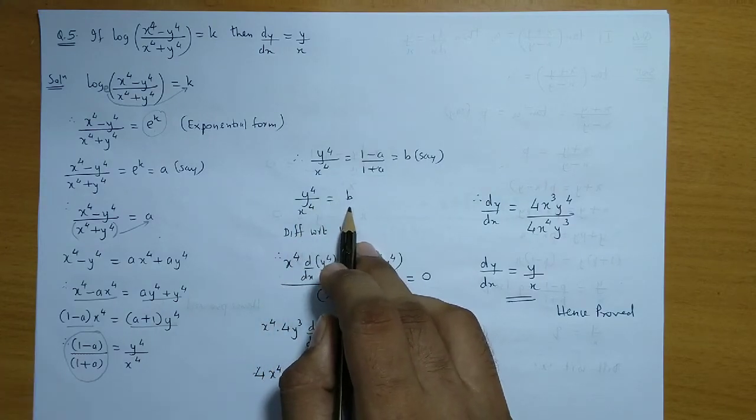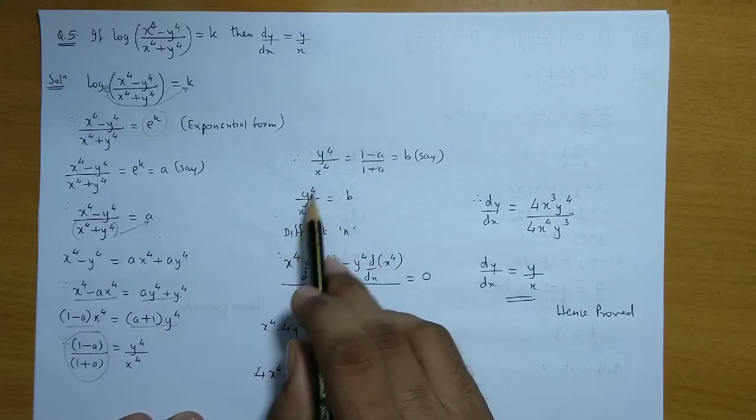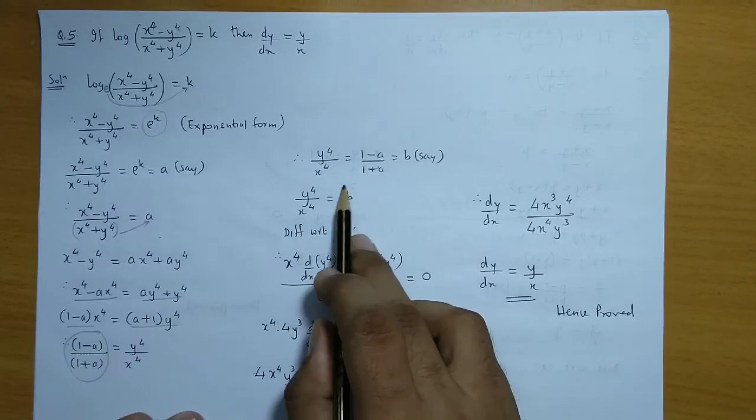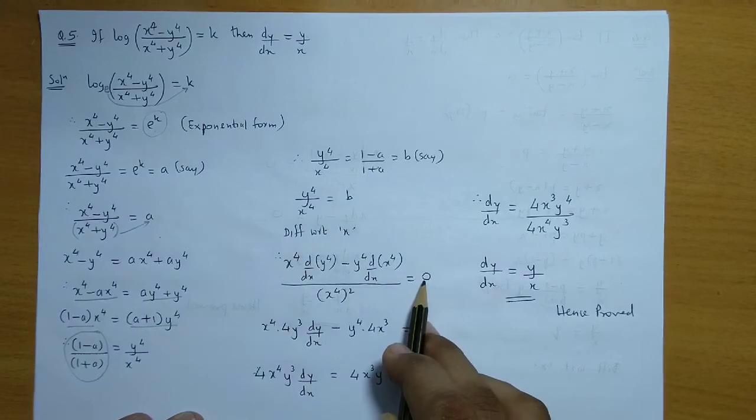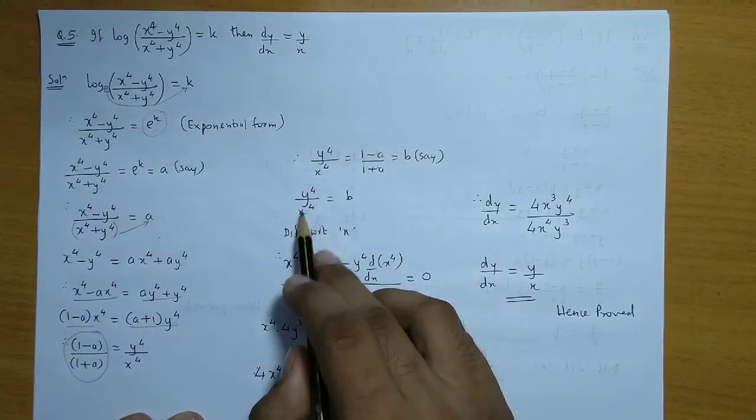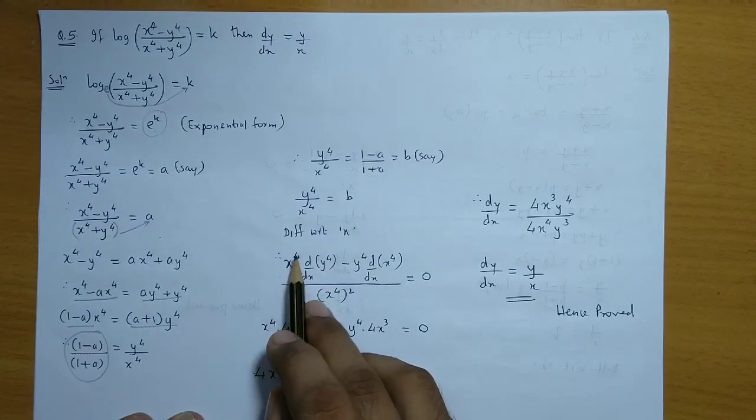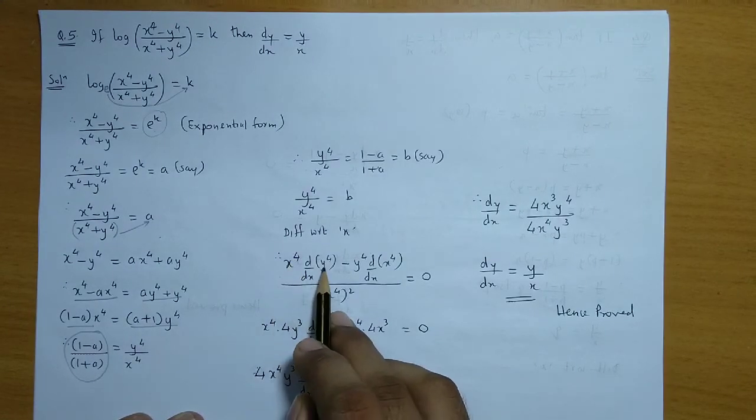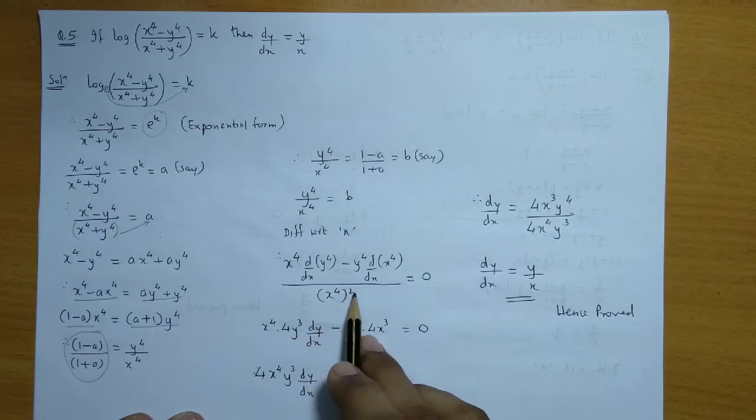And now we differentiate both sides with respect to x. So left hand side will have u/v rule. And right hand side, derivative of b which is constant, and the answer is zero. So applying the u/v rule on the left hand side, we get x⁴ into derivative of y⁴ minus y⁴ into derivative of x⁴ upon (x⁴)².